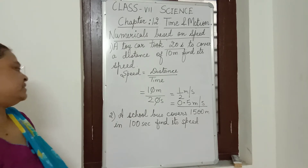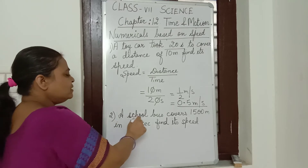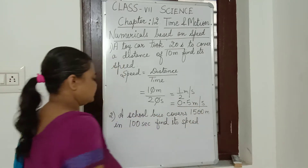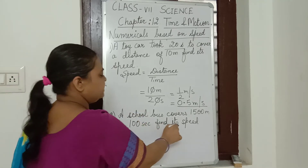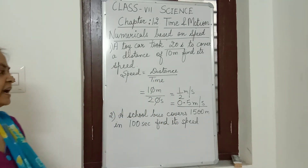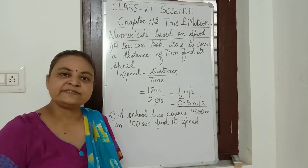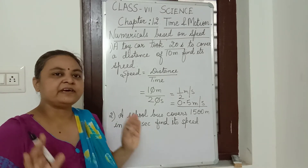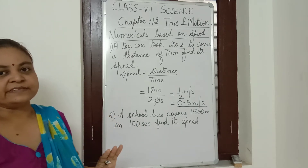Now come to the second one. A school bus covers 1500 meters in 100 seconds. Find its speed. So the school bus travels 1500 meters in 100 seconds.